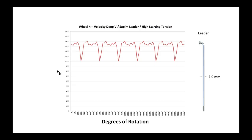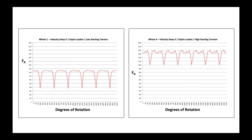Here is the graph of the high tension wheel. A side-by-side comparison of two identical wheels, the only difference being the amount of tension that is built into them. The one on the left is the low tension wheel, the one on the right is the higher tension wheel.